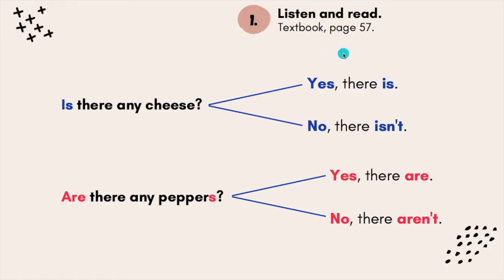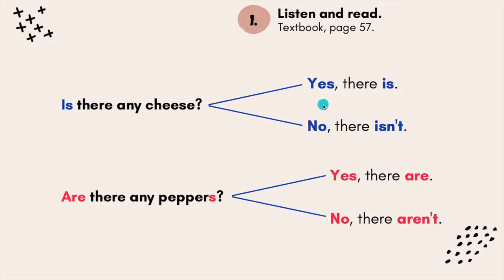Now let's look very carefully at this question: Is there any cheese? If the answer is yes, this is how you write it — yes, comma, there is, full stop. And if your answer is no, you must answer: no, there isn't.